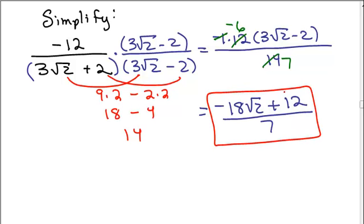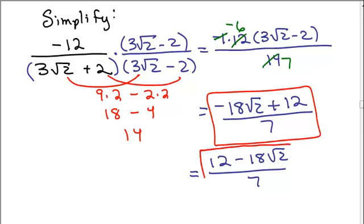That's one way to do this problem, one way to write the answer. If you want, you can use the commutative property in the numerator and write the integer first, the 12. You could write (12 - 18√2)/7. That's also a correct answer. Either of these is fine.